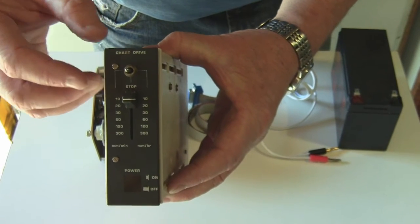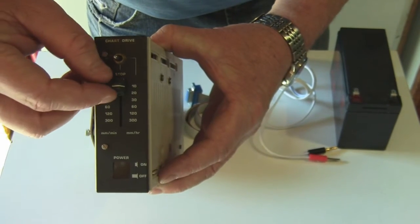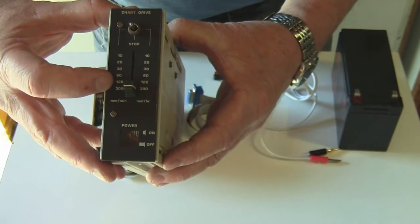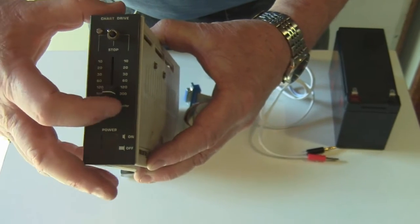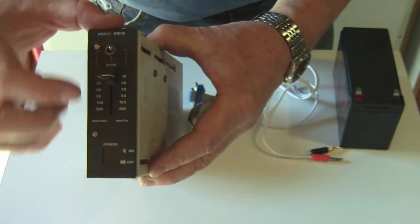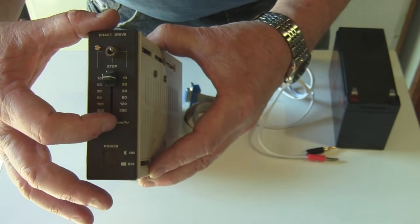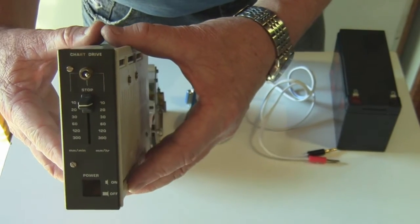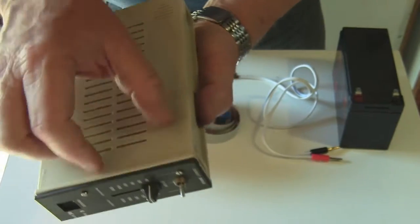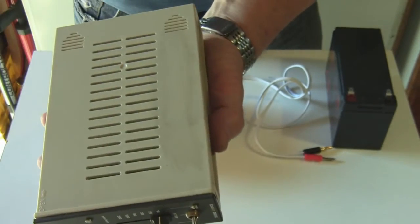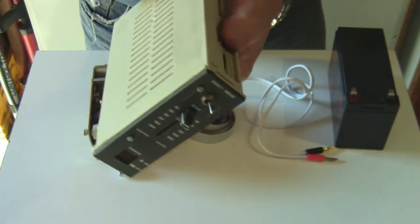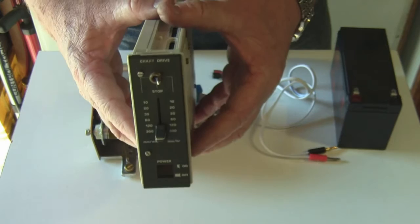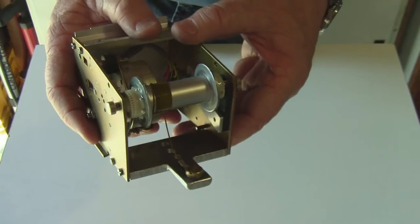The nice thing about using the chart recorder's mechanism to run the stepper motor is that you can change the speed all the way from 300 millimeters per minute down to 10 millimeters per hour. So you've got an amazing range of speeds. So what I still want to do is put a piece of paper on the side here, some notes telling me how long it takes on any setting to run the full length of the tracker arm.